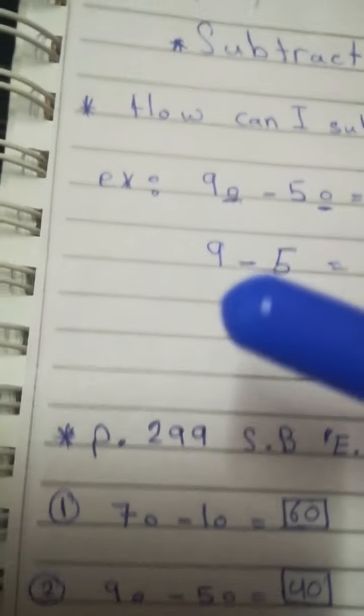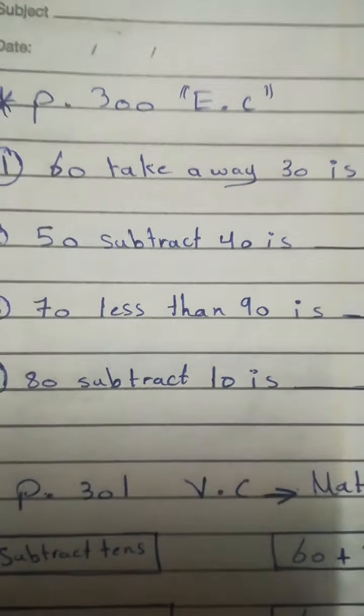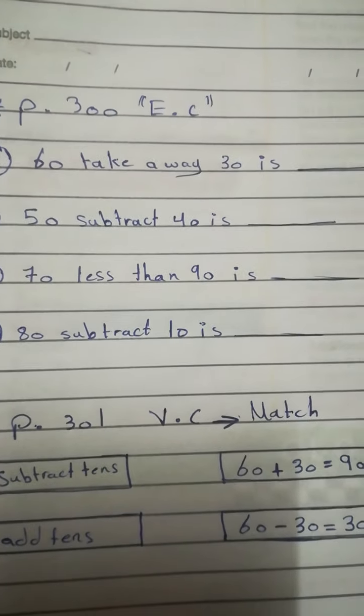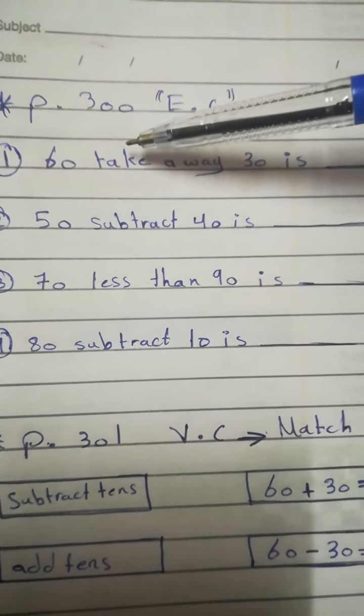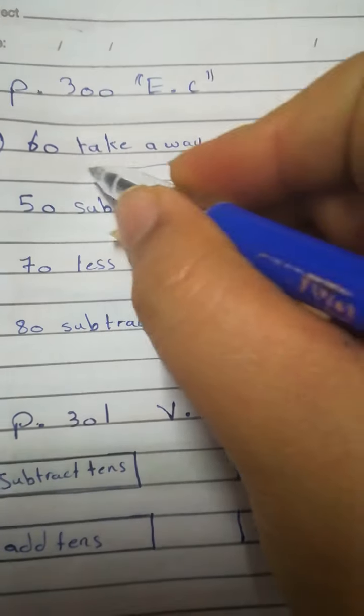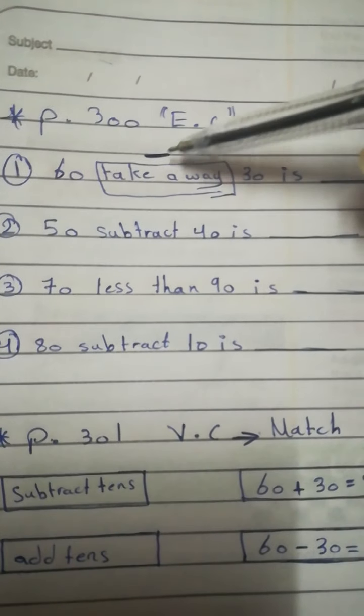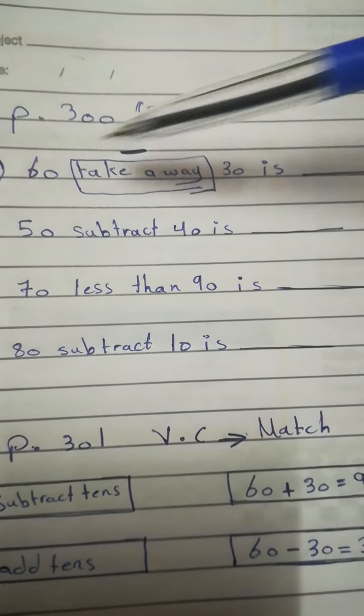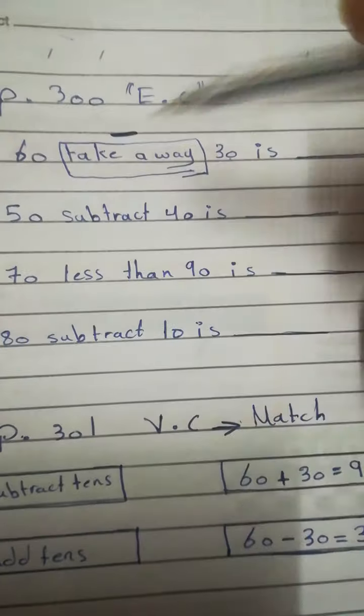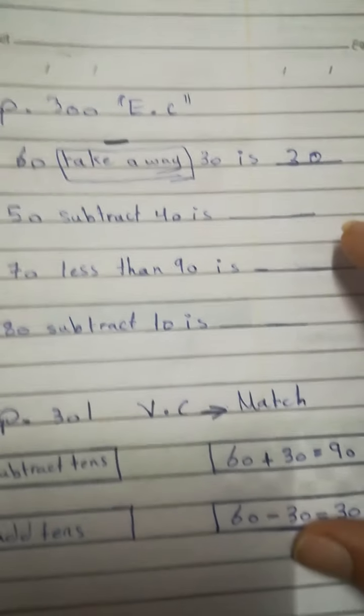Now, please go with me to page 300 to do exercise C. Now, exercise C. Subtract and write the number. Look here, number 1. We have a sentence. 60 take away 30. Take away here means what? It means minus. We have to make minus. We have to subtract. 60 take away means subtract. Okay? 60 minus 30 means how many? 0 minus 0 is 0. 6 minus 3 is 3. Excellent. So, 30.